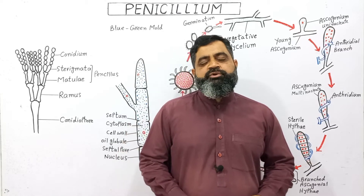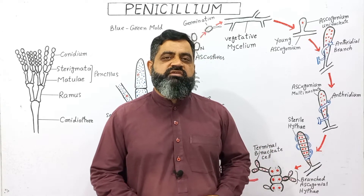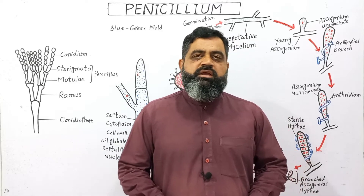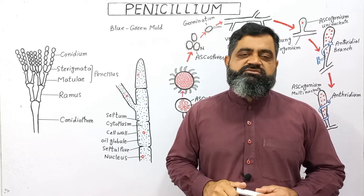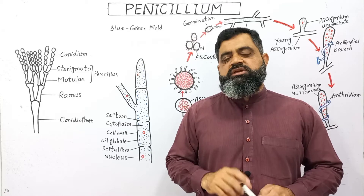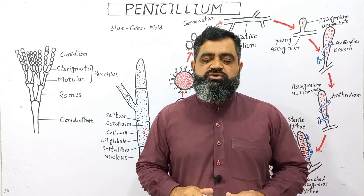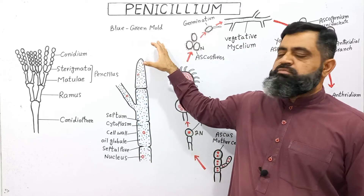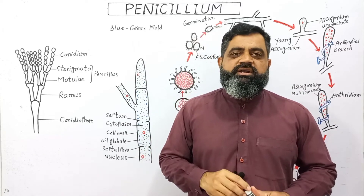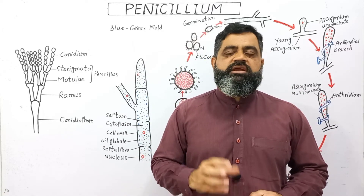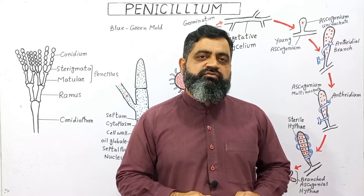Hello to all students. Today we are going to discuss a fungus known as Penicillium notatum, usually called blue-green mold. It has many species. Molds are specialized fungi with a filamentous body. The unicellular fungus is known as yeast, while multicellular and filamentous fungi are molds. They are usually blue or green in color, and are found growing on dead and rotten fruits, vegetables, and bread.